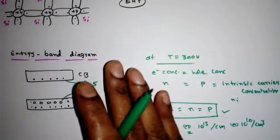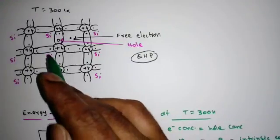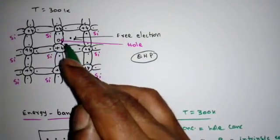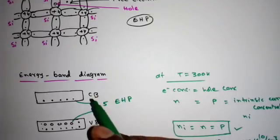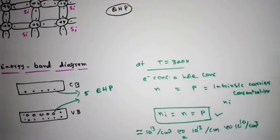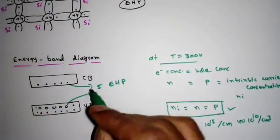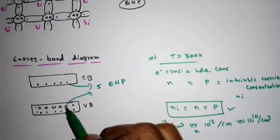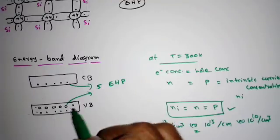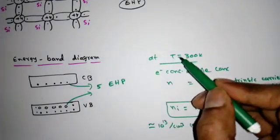To summarize: at T = 0 Kelvin, an intrinsic semiconductor behaves like an insulator. When we raise the temperature, covalent bonds break and generate electron-hole pairs. There is a possibility of recombination, but at steady state there is an intrinsic carrier concentration of the order of 10¹⁰ to 10¹⁵ per cm³. With free electrons in the conduction band and holes in the valence band trying to occupy vacant spaces, both electron and hole conduction are possible at T = 300 Kelvin.